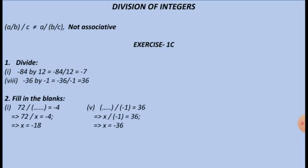Division of integers is very important and is not associative: a divided by (b divided by c) is not equal to (a divided by b) divided by c. Exercise 1c: divide minus 84 by minus 12 — since both are negative the answer is positive 7. For minus 36 divided by minus 1, the result is 36, as the two negatives cancel. For fill-in-the-blank questions, take the unknown as x: 72 divided by x equals minus 4 implies x equals minus 18. Solve the remaining questions at home.